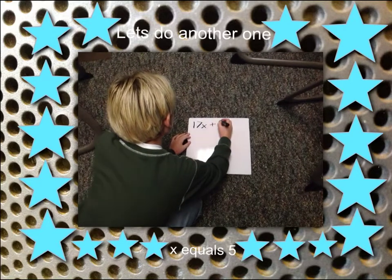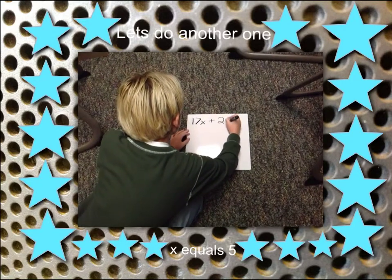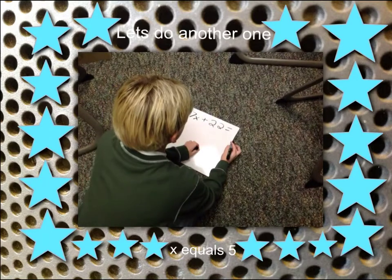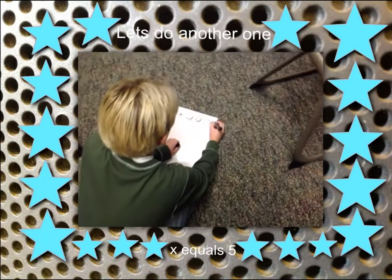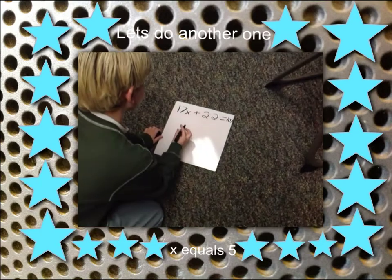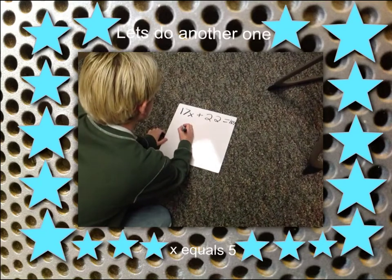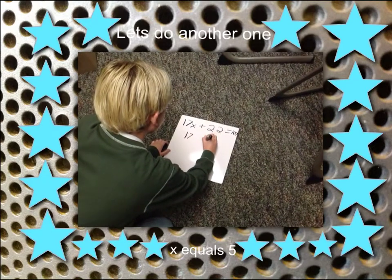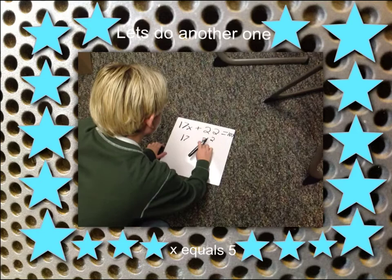17x plus 22 equals 107. Now, I am balancing the equation, which is step 2.